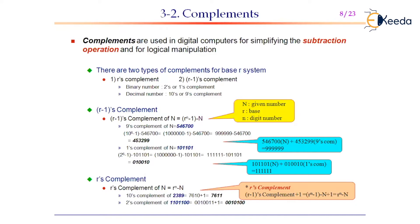The 1's complement can easily be obtained by reversing each and every digit, after which adding 1 gives the 2's complement. These are essentially needed to perform subtraction — take the 2's complement of the subtrahend B and add it to the minuend A, which gives you A minus B.